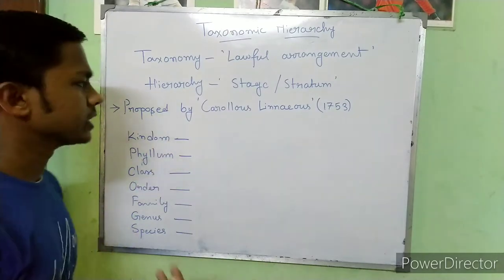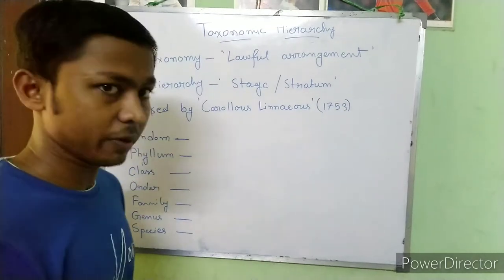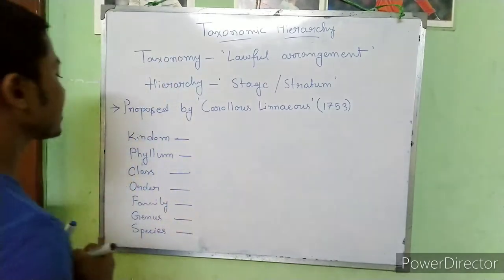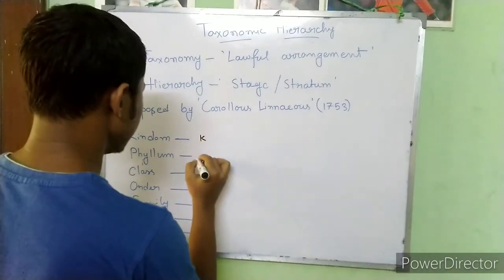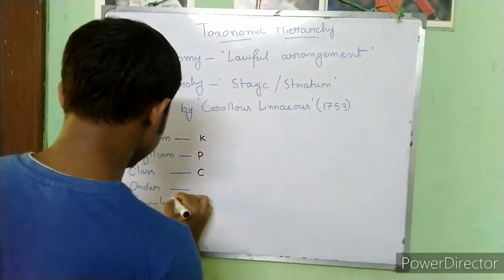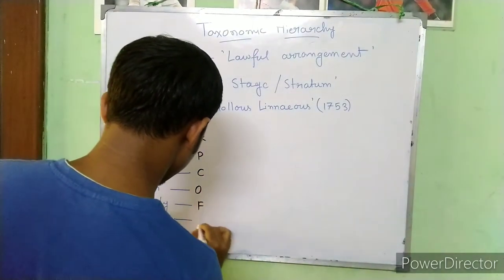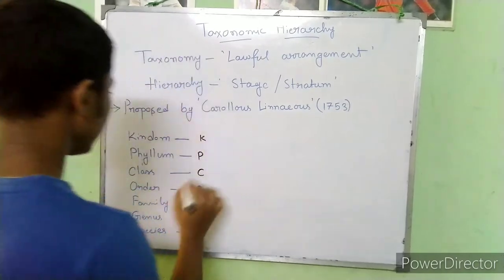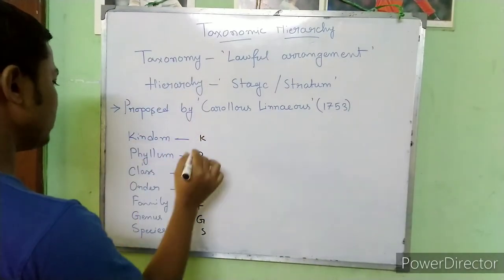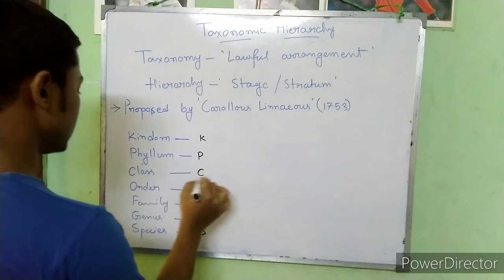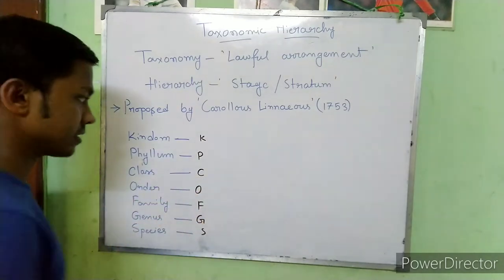We also use a short form for this arrangement: K, P, C, O, G, S. Kingdom is K, Phylum is P, Class is C, Order is O, Family is F, Genus is G, and Species is S. So the short form is KPCOFGS.